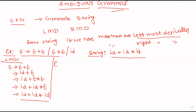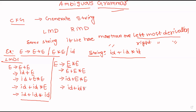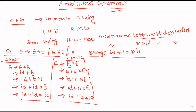Now consider leftmost derivation 2: E → E into E. In leftmost derivation, we replace this E with E plus E, then derive id plus id into id. We get the same string using a different procedure, and this is also a leftmost derivation. That means for this given grammar, we have two leftmost derivations for the same string.